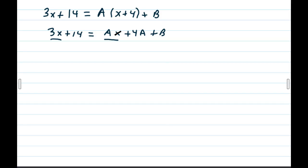The only x term on the left is 3x. The only x term on the right is Ax, so that means that A better be 3. The 14 on the left, which is the only constant, on the right there's two constants, 4A plus B. So that's going to imply that 14 must equal that 4A plus B, which of course has lots of different solutions.